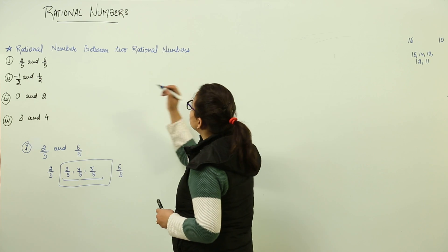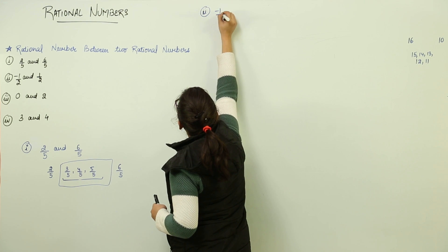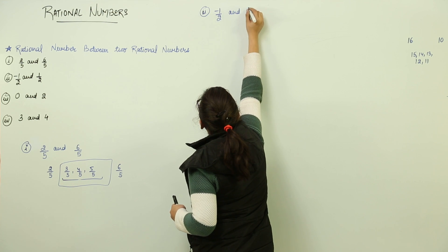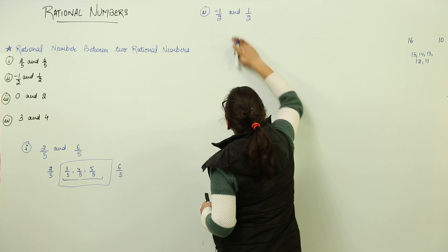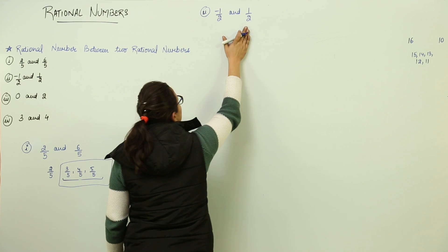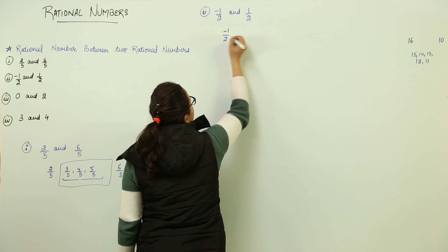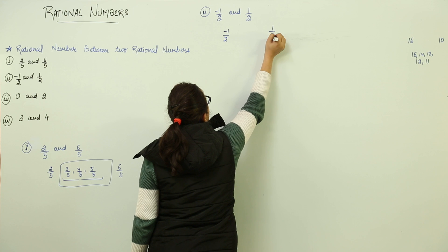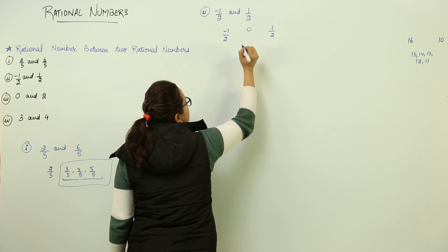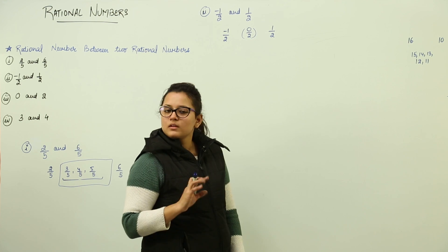Now what would you do for the second case? Now my second case says that you have to find the rational numbers between minus one by two and one by two. Let us check the denominators are same only. So we can only consider the numerator. What is in the numerator? Minus one and plus one. We know how many numbers lie between minus one and plus one? Zero only. So you can write zero by two.